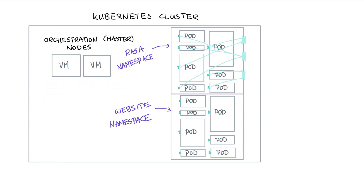Another benefit of namespaces is that services inside a namespace can offer static IP addresses within that namespace, so different pods know how to reach each other within it. That said, everything described so far still happens within the Kubernetes cluster — the outside world doesn't know how to communicate with it yet. One of the final abstractions to highlight is ingress, which you can look at as the portal to the outside world.